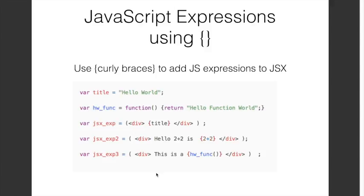You can also make JSX dynamic by embedding JavaScript expressions within JSX. To add JavaScript expressions within JSX you have to use curly braces. For example, see the expression on the third line — you have a JSX expression in brackets, then within that a div opening and closing tag, and within that you embed a JavaScript expression using curly braces. Here, title is a JavaScript variable which translates to hello world, so this JSX expression will translate to div hello world div.